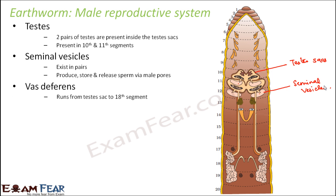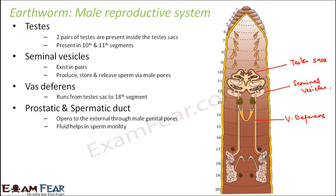Next is the vas deferens — it is a tube-like structure which runs from the testis sac to the 18th segment. It starts from the testis sac and runs up to the 18th segment. It is basically a tube-like structure used to carry the sperm once it is released from the seminal vesicles.